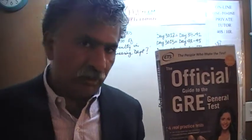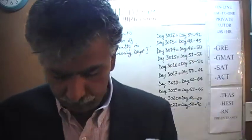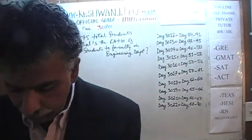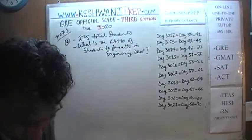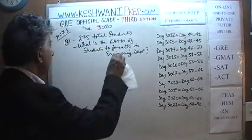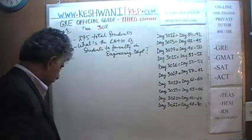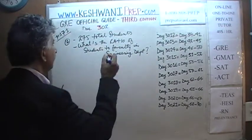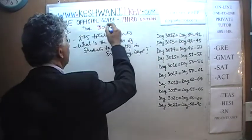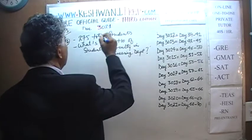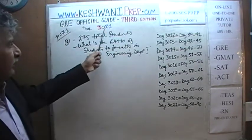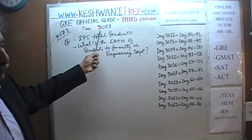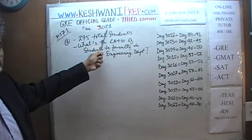If you do not own this book already, purchase one immediately — you are going to need it. Today is our lesson number 21, Day 3021. The '3' is to signify that we are in the third edition, day 21.